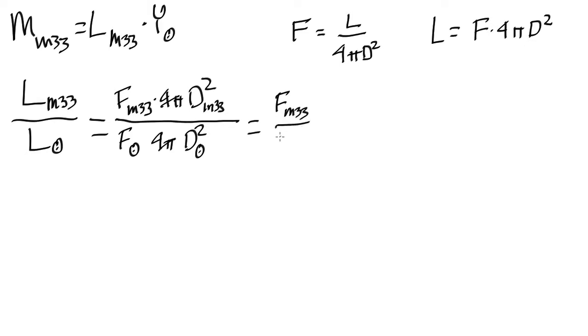And you note we can cross out those 4 pi's and simplify this just to being the ratio of the fluxes of M33 to the sun, and the ratio of the distances of M33 to the sun, squared.